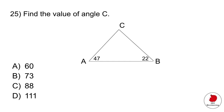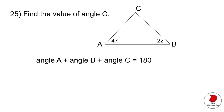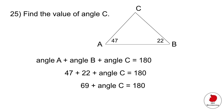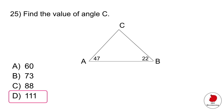Question 25 is a geometry question asking for the value of an angle in a triangle. Remember that all angles in a triangle must equal 180 degrees. Plug in the known angles and solve for c. Subtract 69 from both sides and you find that angle c is 111 degrees, option D.